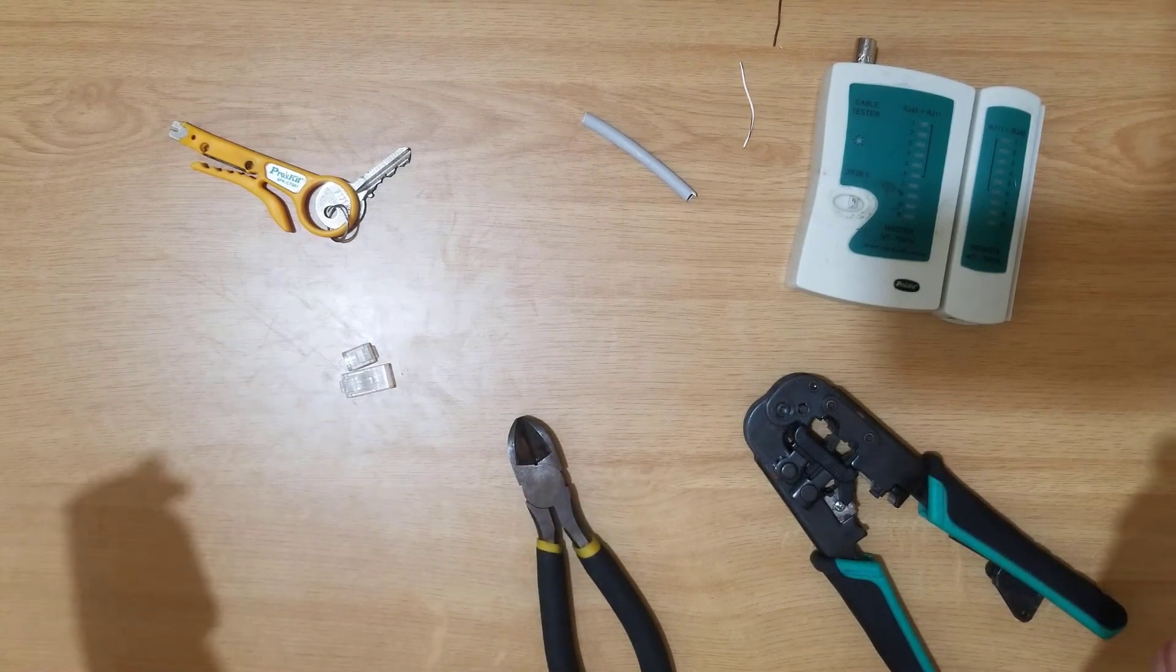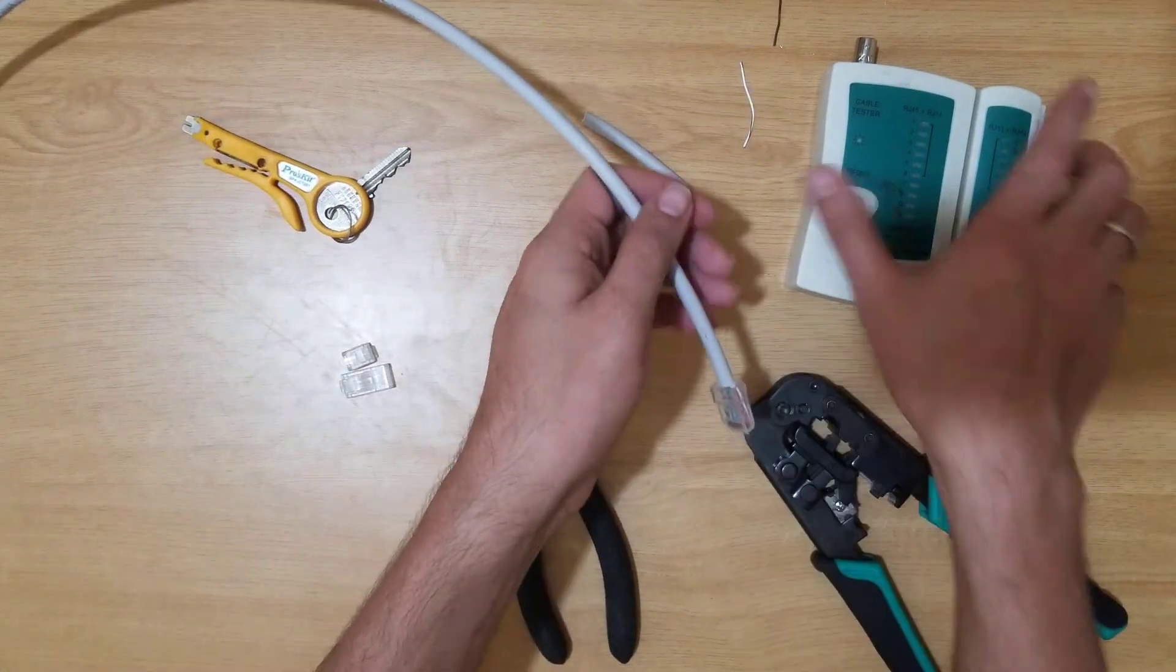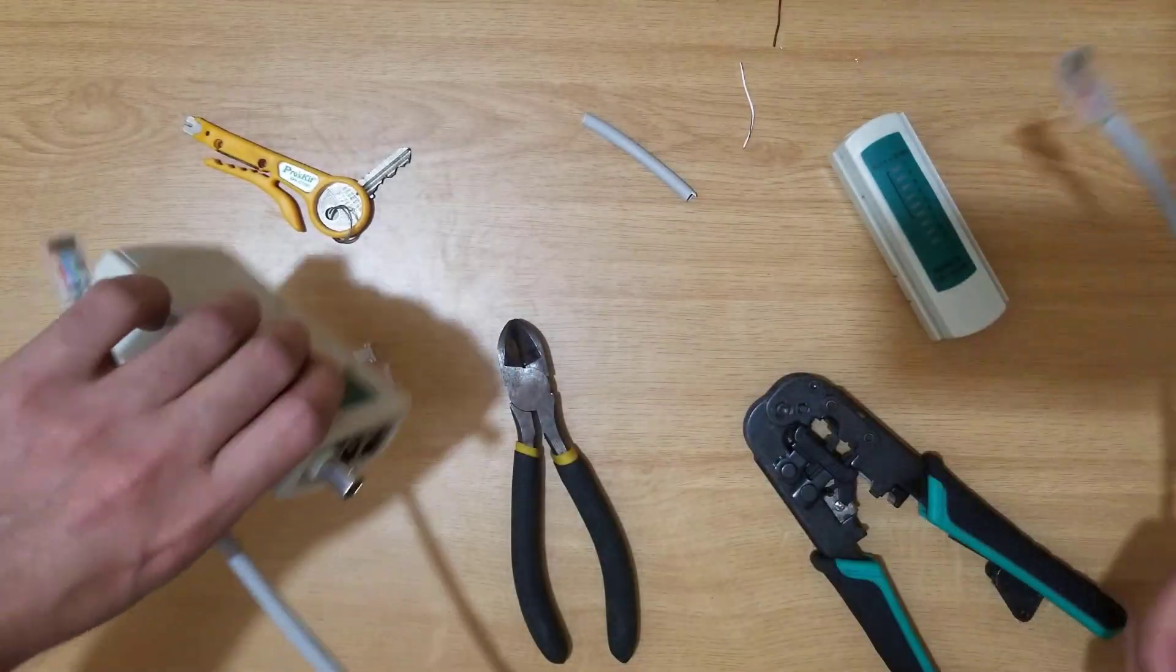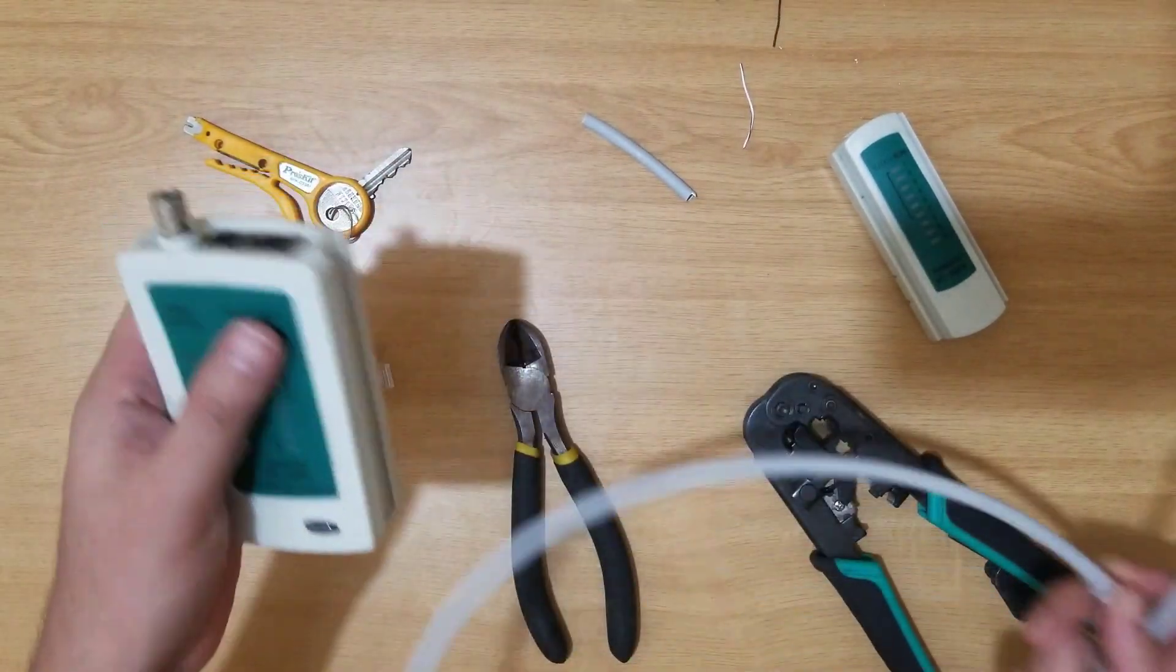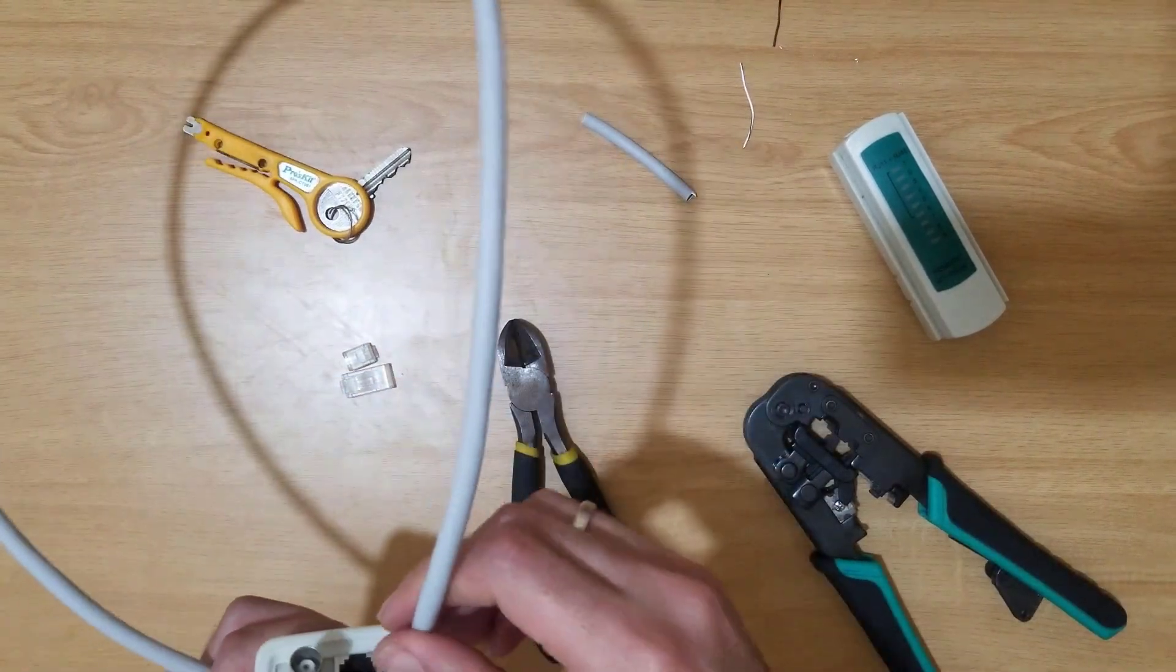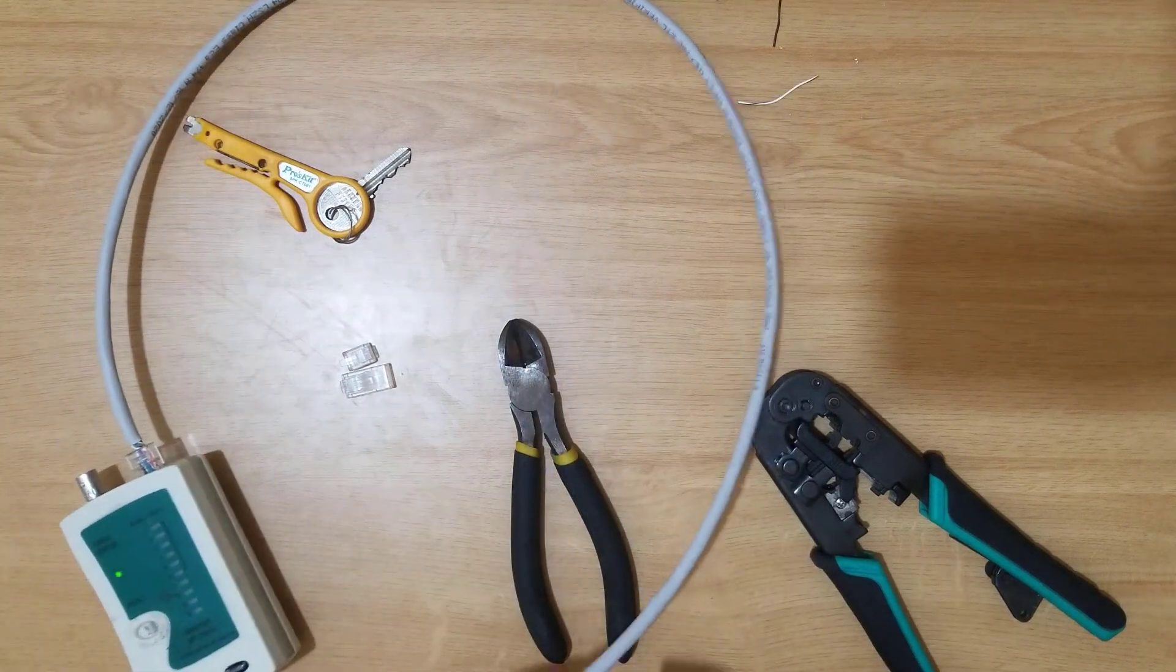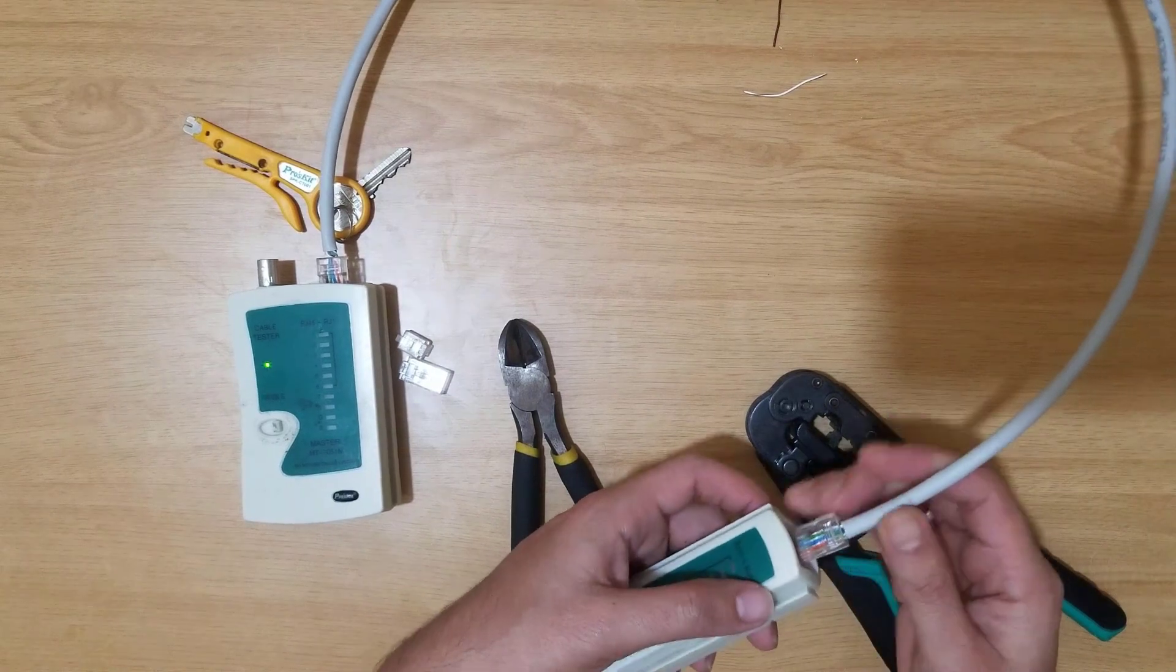In troubleshooting, when there is a long distance Cat 6 cable, we use this LAN tester so we can check if the cable connectivity is there or if any pair is damaged in between. Once I connect to the second one, it will start to show the LEDs.